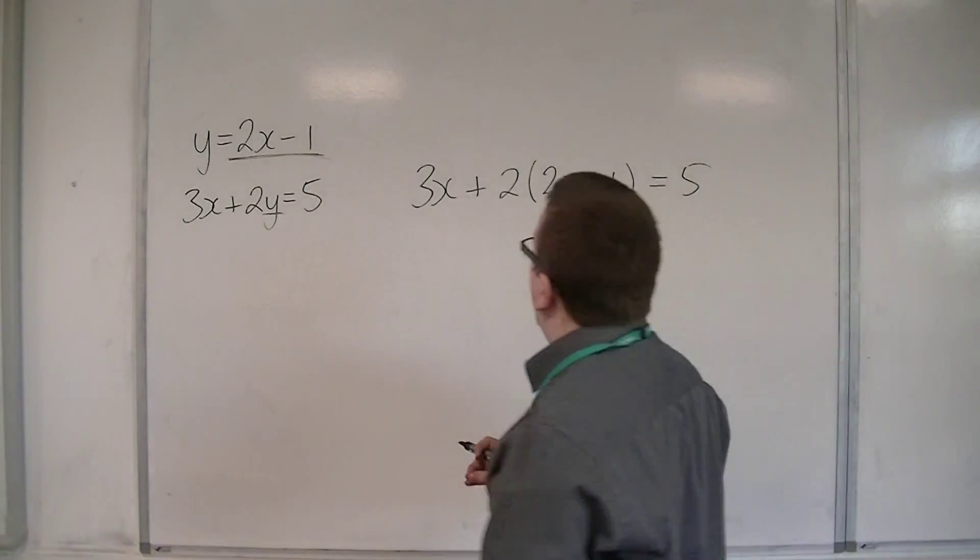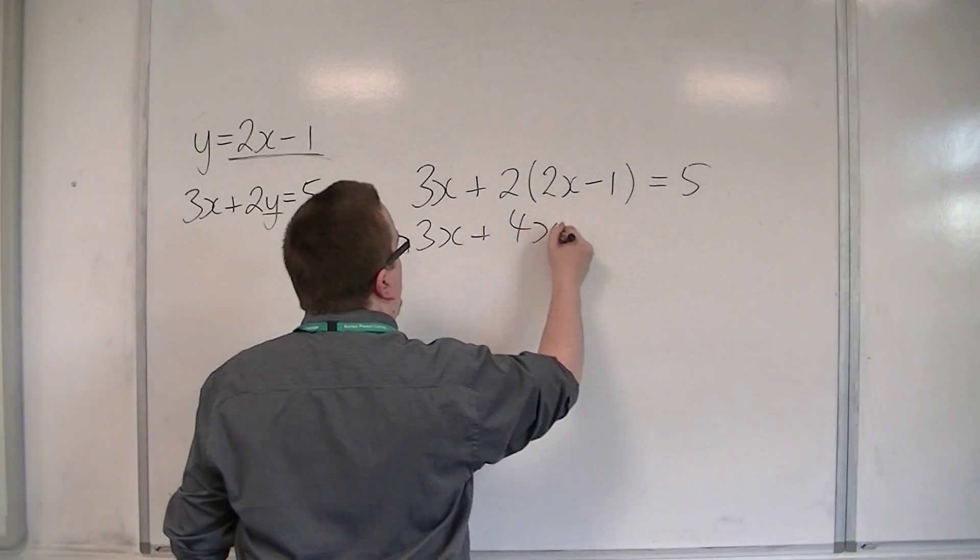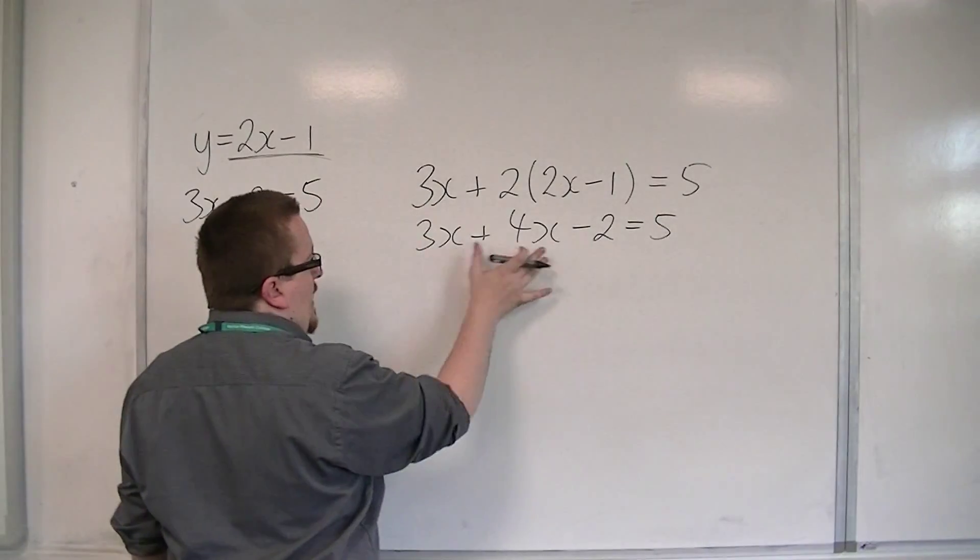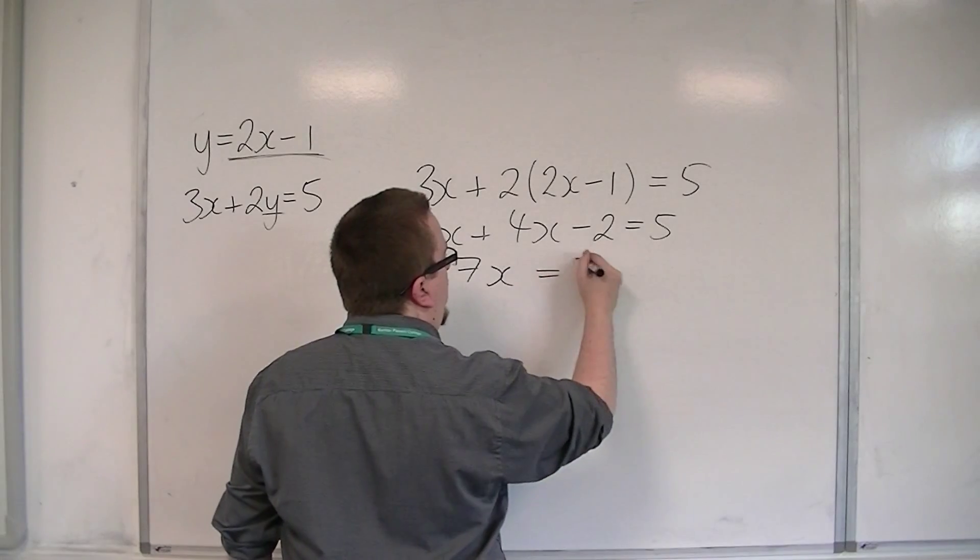We now solve this equation. So we have 3x plus 4x minus 2 is 5. The 3x and 4x combine to make 7x.